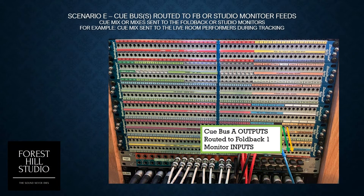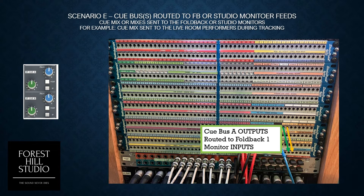The next scenario, scenario E: we take a cue bus or buses and route them out to the foldback or studio monitors for performers out in the live room. Here we take cue bus A outputs and route them to foldback 1 monitor inputs, allowing either headphone mixes or output to monitors in the studio — whatever is connected to foldback 1. You could also easily use the studio monitors. This is the control on the console that allows you to send out to those output buses, with panning and post-fader options to adjust to your own needs.